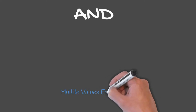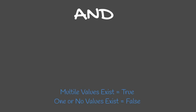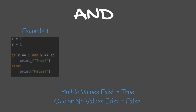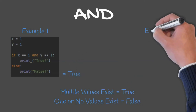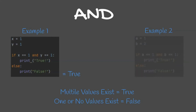With AND, the statement is true only if all values exist; if only one or no values exist, the statement is false. In our example, x equals 1 and y equals 1, so the statement "if x equals 1 AND y equals 1" would print true, otherwise it would print false. In this example, because x equals 1 and y equals 1, this would print true. In our next example, a equals 1 and b equals 2.